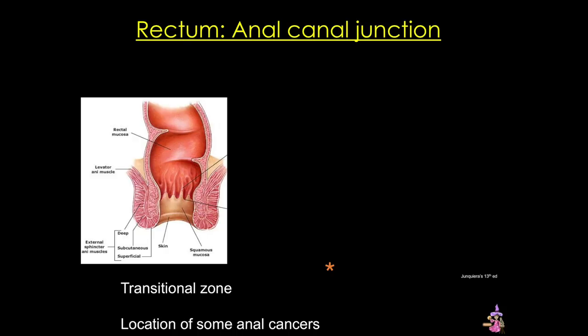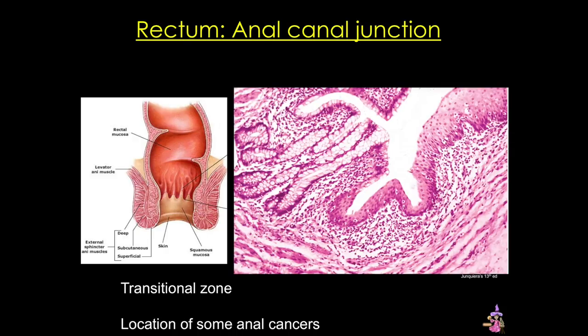The lower part is called the anal canal, and at this level the epithelium transitions from simple columnar to stratified squamous non-keratinized epithelium, and then to keratinized epithelium just before the external opening. This transition zone has clinical significance: colorectal adenocarcinoma originates just above this transformation zone, while epidermoid carcinoma originates below this zone in the anal canal. The external orifice of the anus is controlled by an internal sphincter of smooth muscle under autonomic control, and an external sphincter of skeletal muscle under voluntary control.